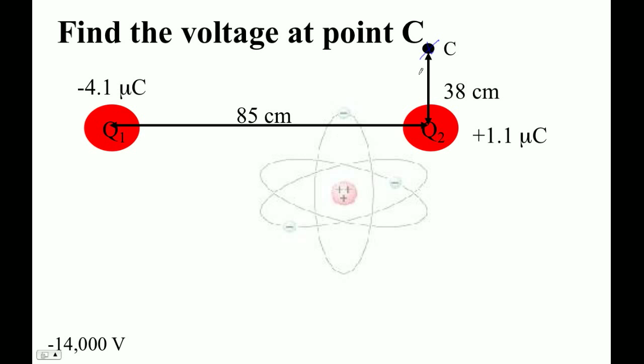So the voltage at point C is going to be—I'm just going to add these guys like scalars, right? The voltage due to one point charge is just KQ over R, and due to two point charges, just add the other KQ over R. I mean literally add them.